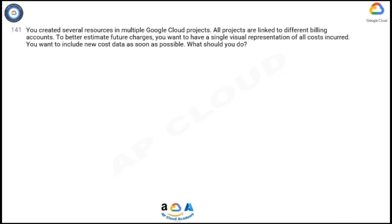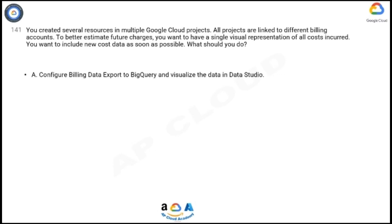Question 141: You created several resources in multiple Google Cloud projects. All projects are linked to different billing accounts. To better estimate future charges, you want to have a single visual representation of all costs incurred. You want to include new cost data as soon as possible. What should you do? A: Configure billing data export to BigQuery and visualize the data in Data Studio.